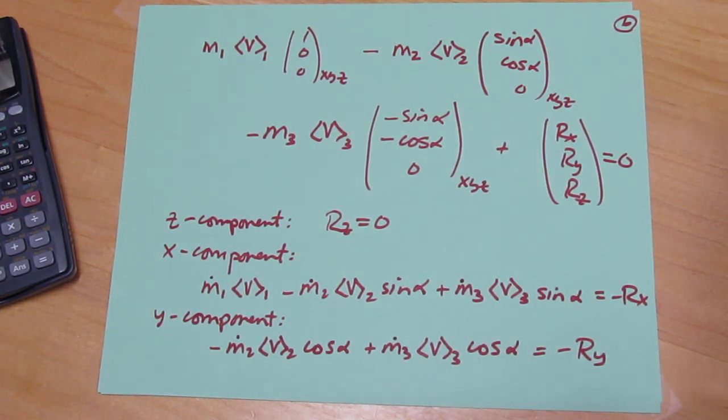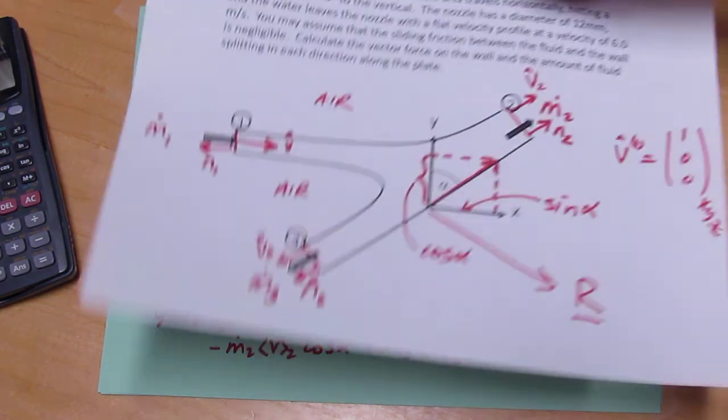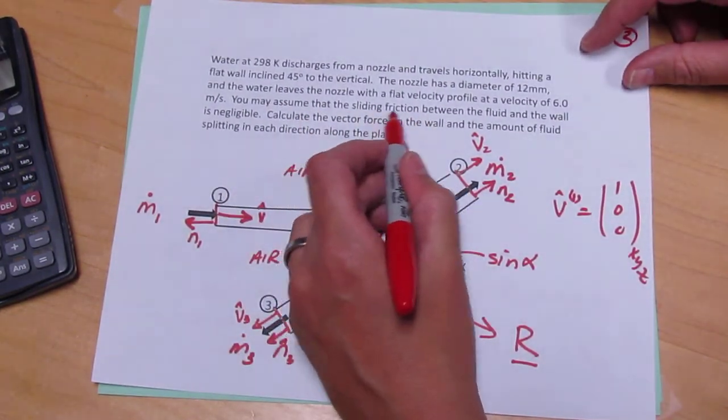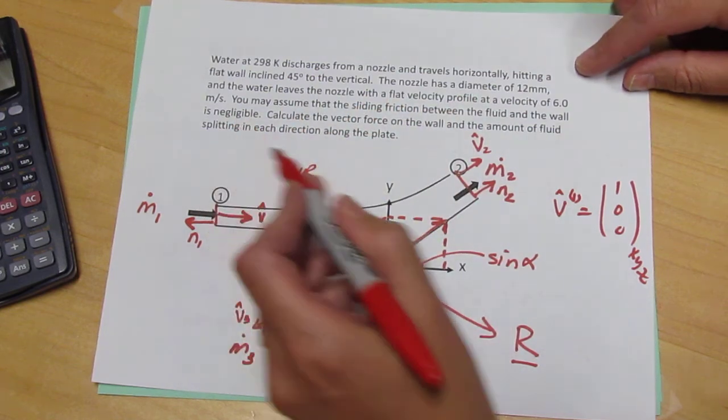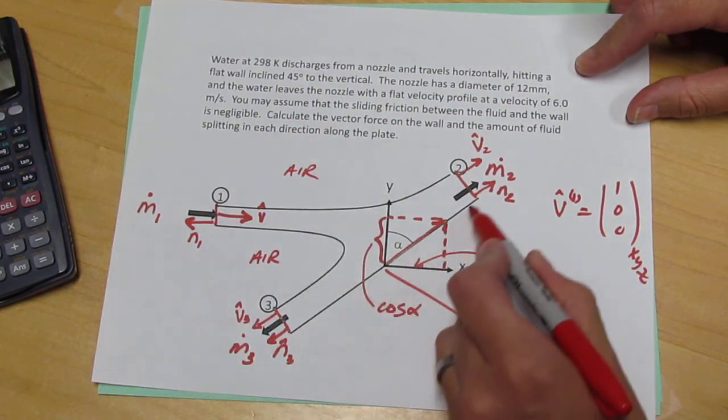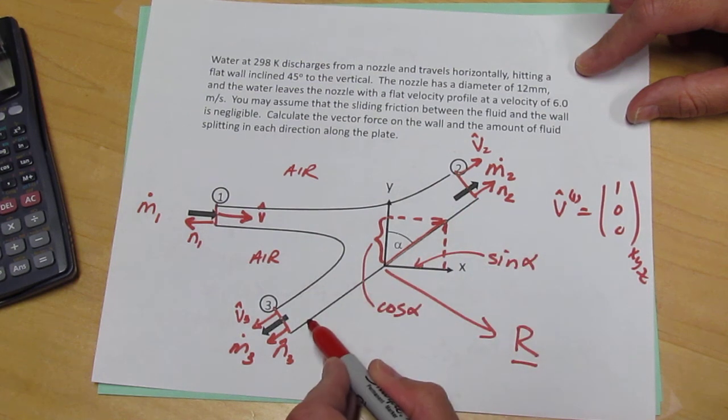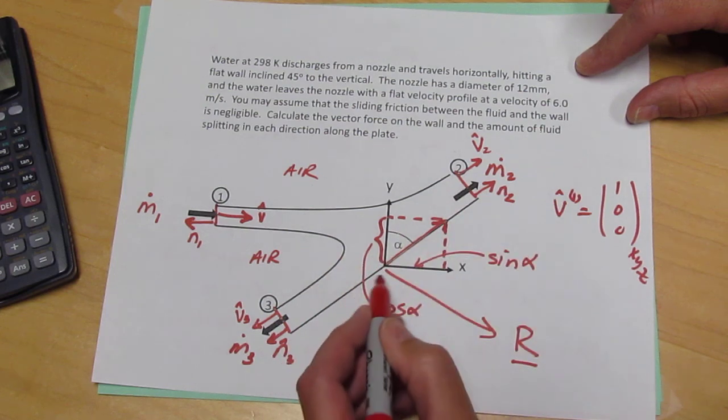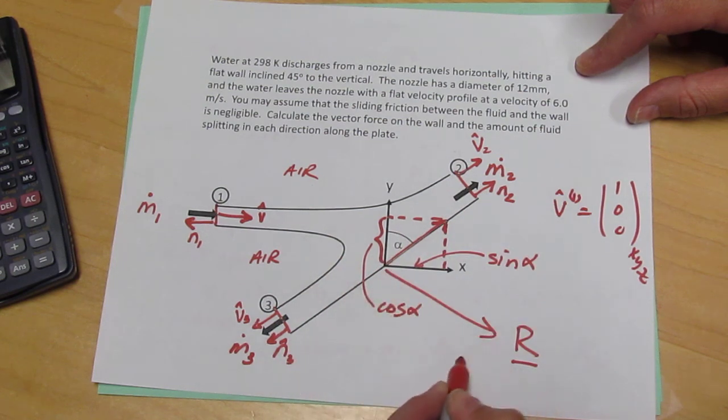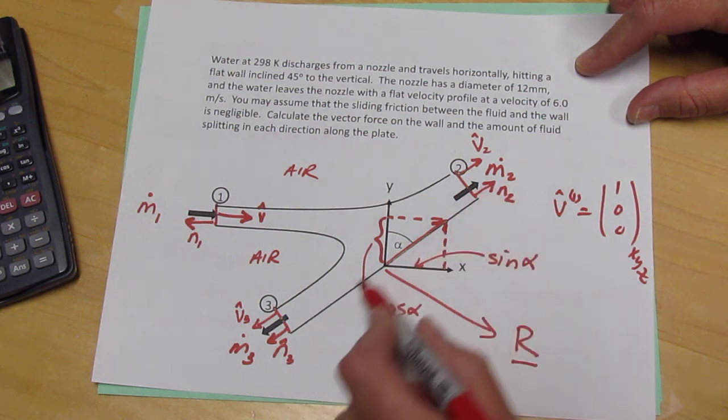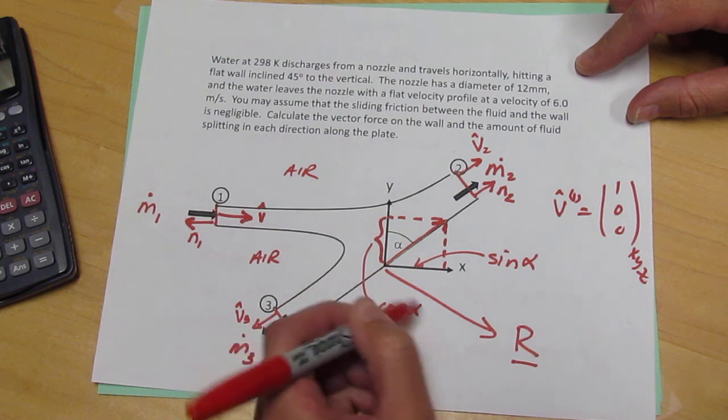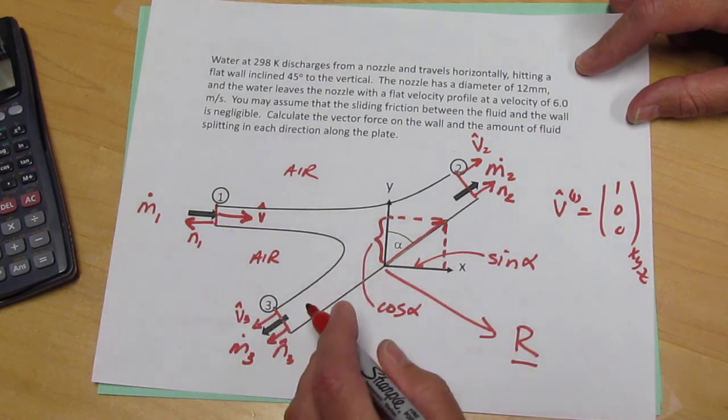The missing information about the split comes in the problem statement that indicates that the sliding friction between the fluid and the wall is negligible. So we're not going to allow any sliding friction between the fluid and the wall. The force on the wall, if there is no sliding friction, cannot have this little component here that I've drawn that's tangential to the wall. In fact, the force R must be perpendicular to the wall if there is no friction at the wall.